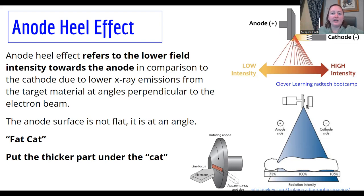And you've probably heard the term fat cat, if you haven't. That just means put the thicker part of the anatomy under the cathode. So what is the thicker, more dense part? And that should go on the cathode side of the beam.